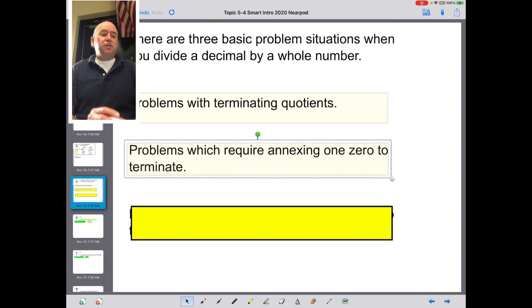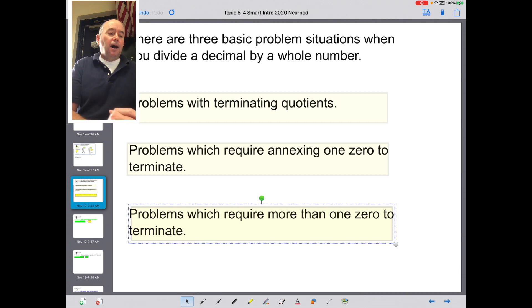Another situation would be problems which require annexing one zero to terminate. Those are kind of easy to solve because you get that zero, bring it down, and the problem ends. Problems which require more than one zero to terminate. So what happens if they keep adding zeros and zeros, Chris? They should eventually decide to look for a pattern or round it to the nearest hundredth or thousandths.